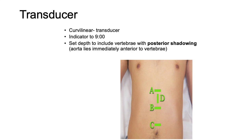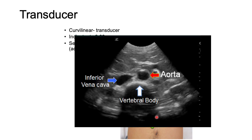For triple-A assessment, the choice of transducer is the curvilinear probe with low frequency, which allows sound waves to travel deep. The scan is performed in both transverse and longitudinal planes — transverse with the probe marker towards nine o'clock and longitudinal with the probe marker towards the head. You must save at least three transverse images of the proximal, mid, and lower parts, and a fourth image in the longitudinal plane.